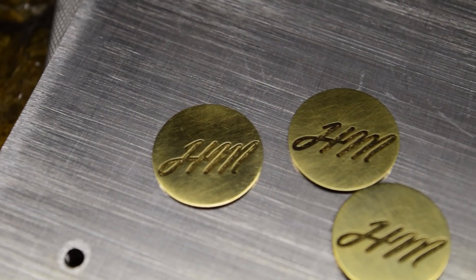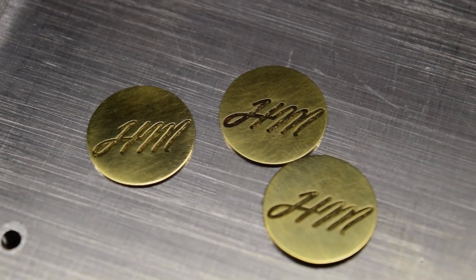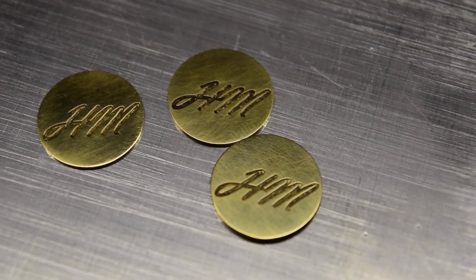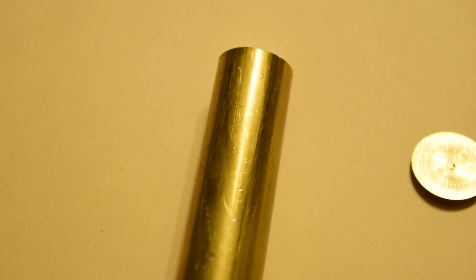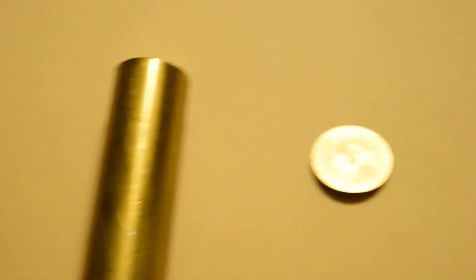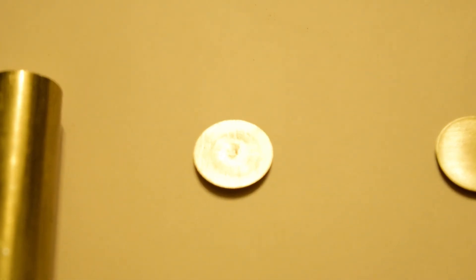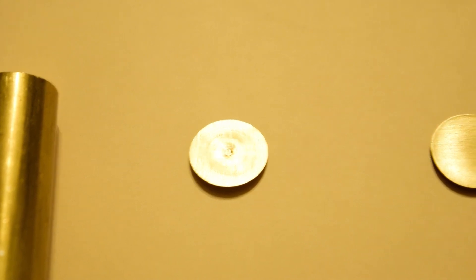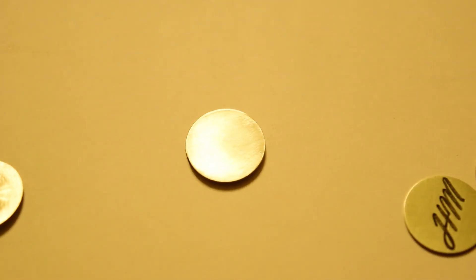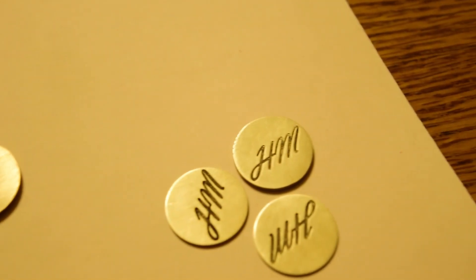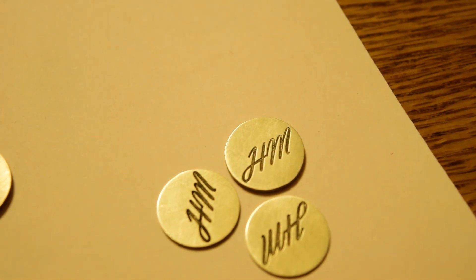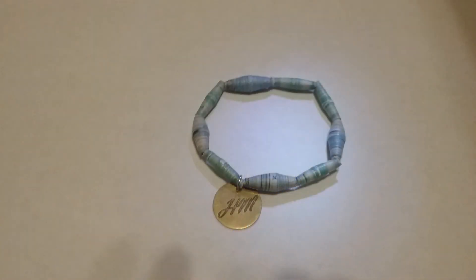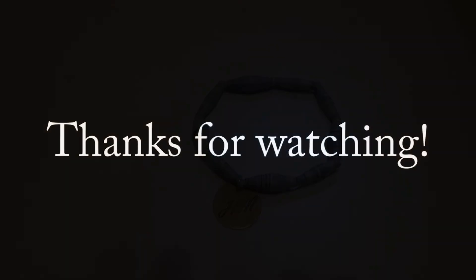I think the final product came out pretty well. Starting with brass stock, we cut those down on the lathe, parted them off, sanded them, cleaned them up to 400 grit, and then engraved them. Here's the finished product. Thanks for watching.